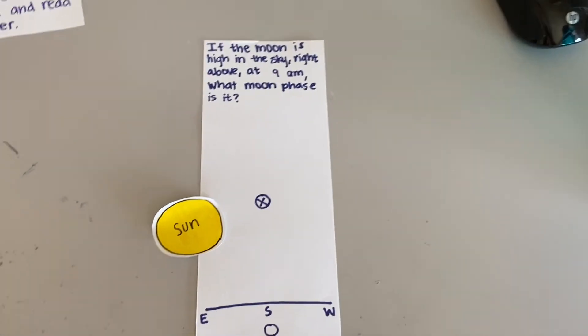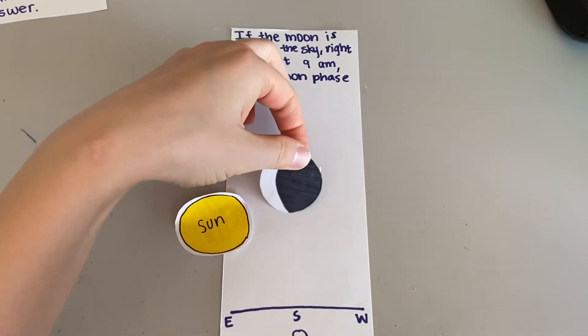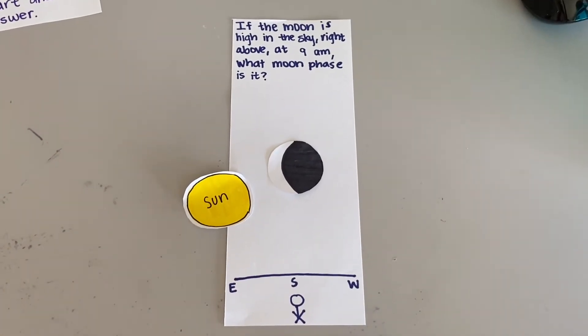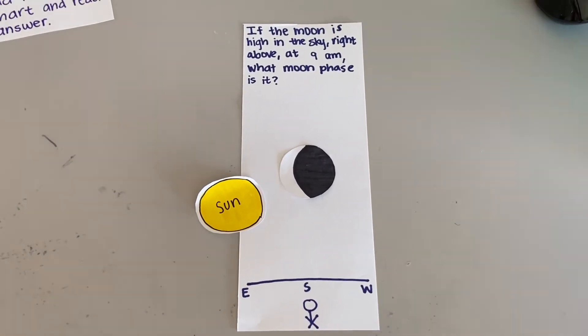Looking back at our diagram, we can see that the waning crescent is going to be highest in the sky at 9 a.m. And this is what it should look like during the day at 9 a.m.